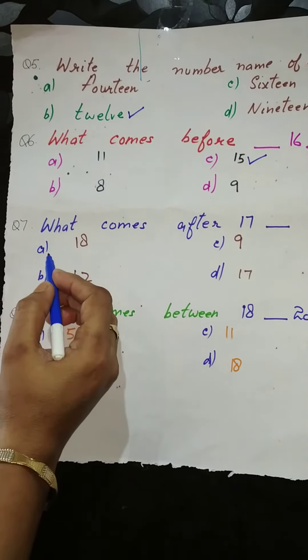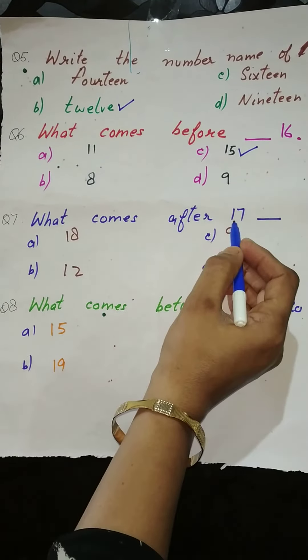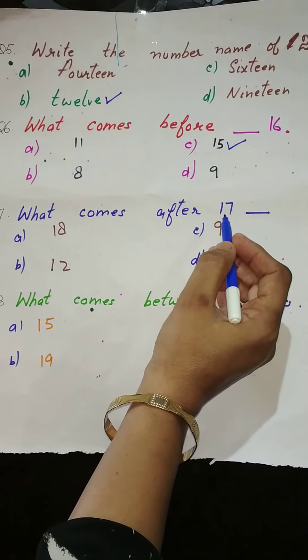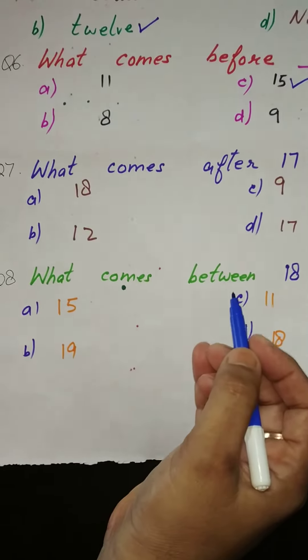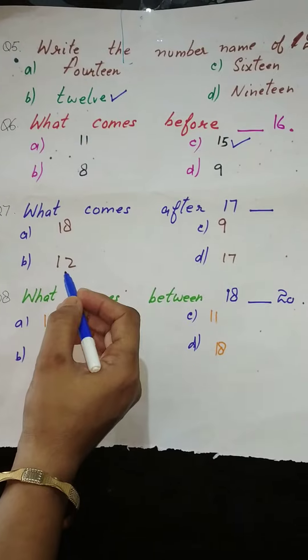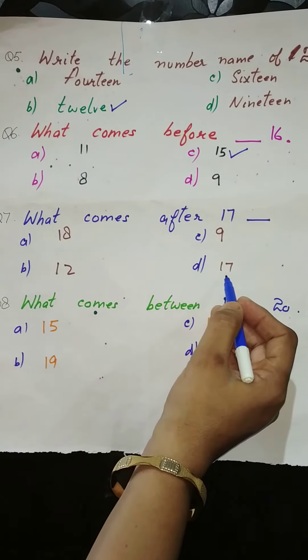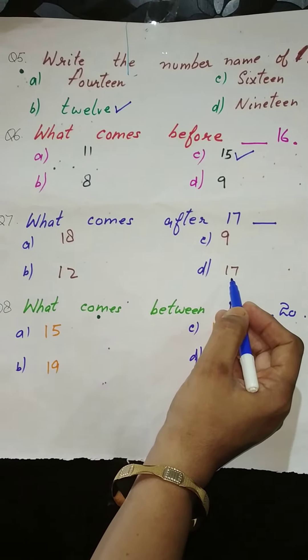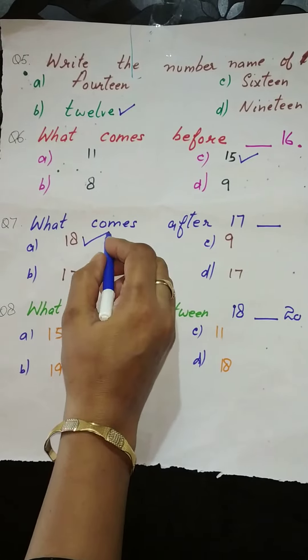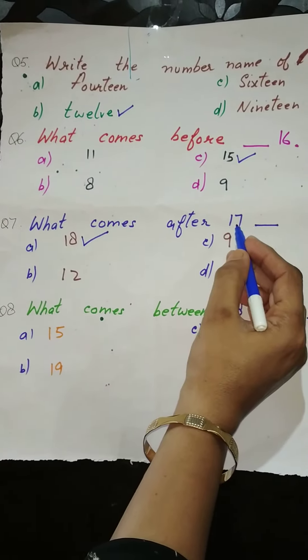Then the next question: what comes after 17? You have to write the number which is after 17. The four options are given: 18, 12, 9, 17. Which is the right option? Yes, 18 is the right option. 18 is after 17.